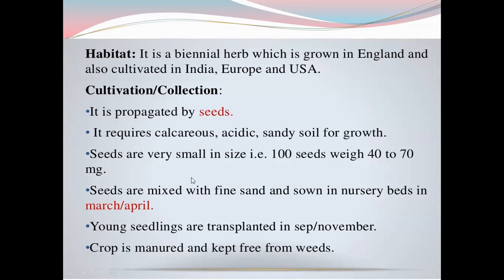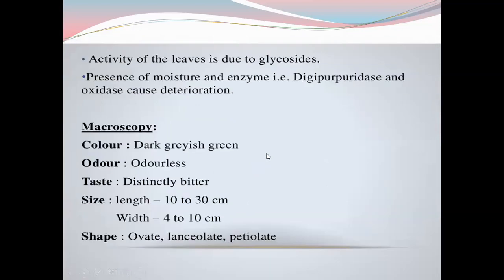Seeds are very small in size; 100 seeds weigh about 40 to 70 milligrams only. The seeds are mixed with fine sand and sown in nursery beds in March and April. Young seedlings are transplanted in September and November. The crop is manured and kept free from weeds.